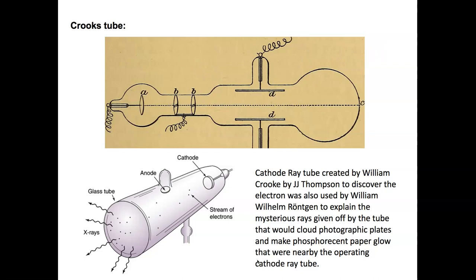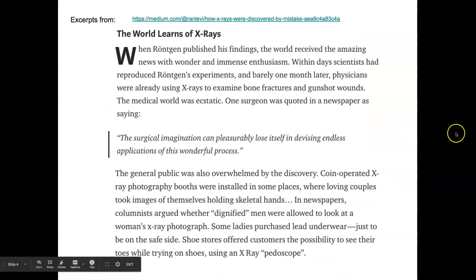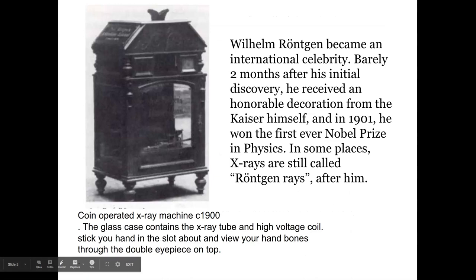Wilhelm Röntgen used these x-rays as a tool for science. X-rays became almost an international celebrity — or at least Wilhelm did. Barely two months after this discovery, he received an honorable decoration from the Kaiser. In 1901, he won the first ever Nobel Prize in physics. In some places, x-rays are called Röntgen rays after him.